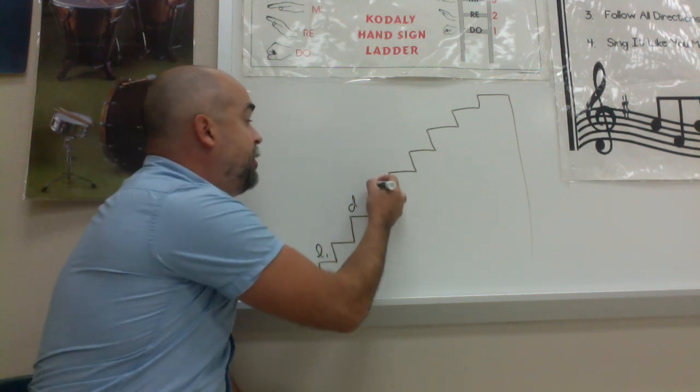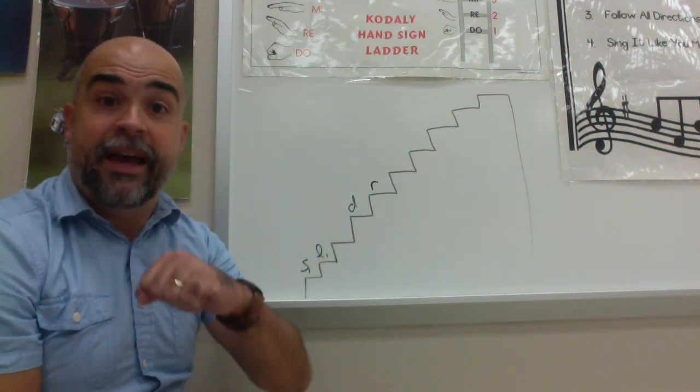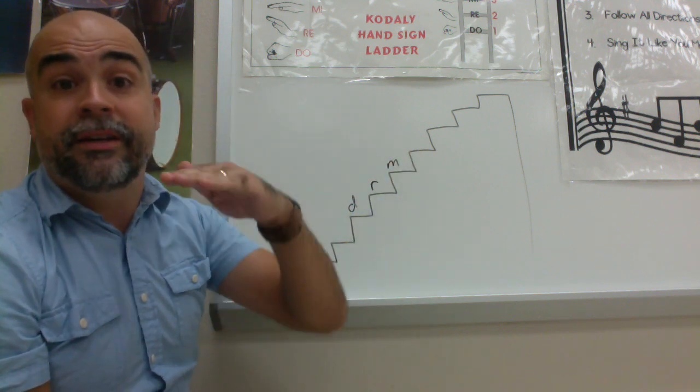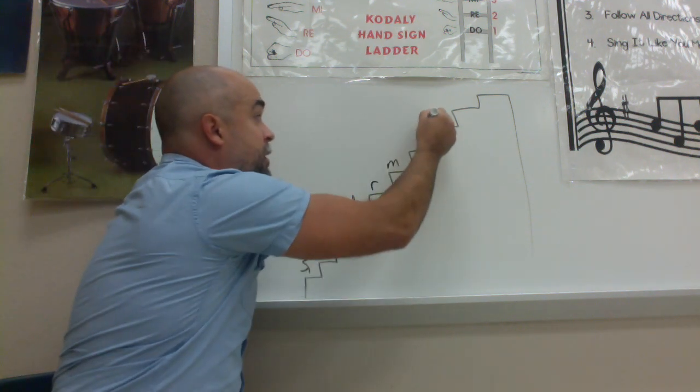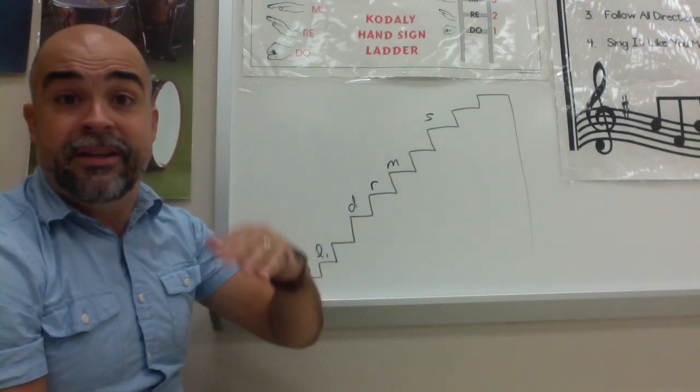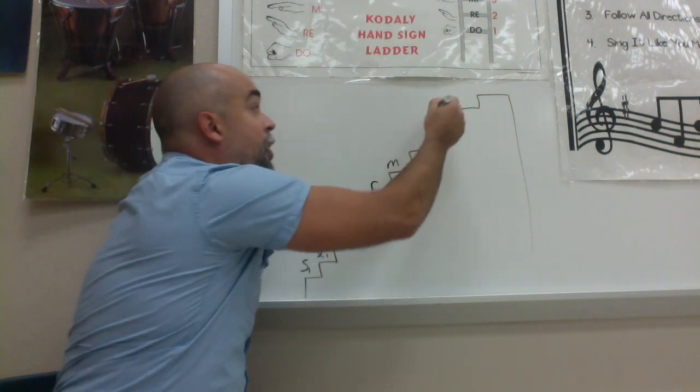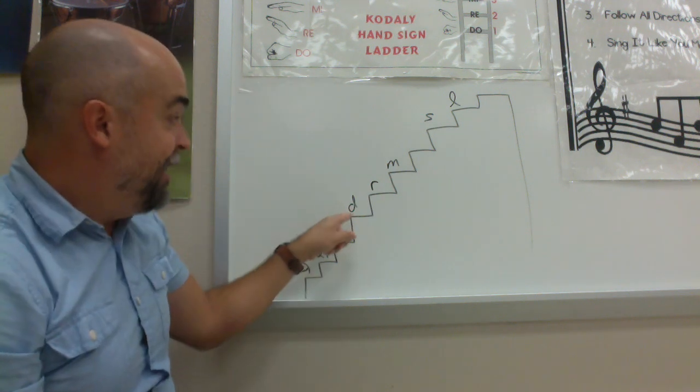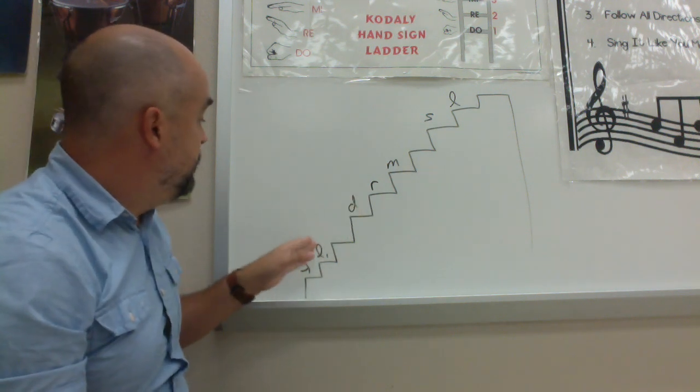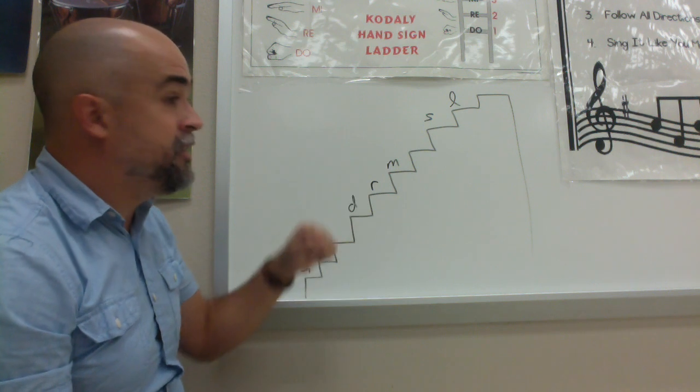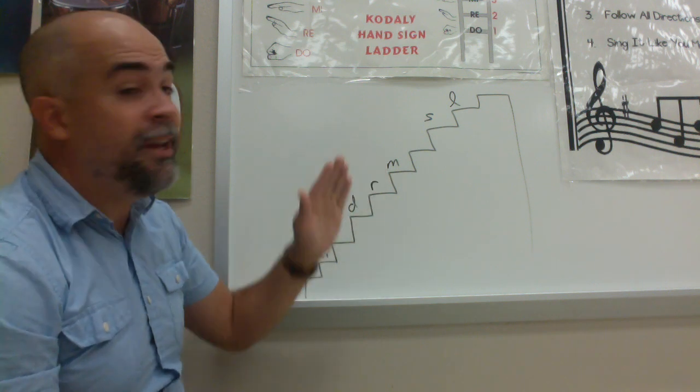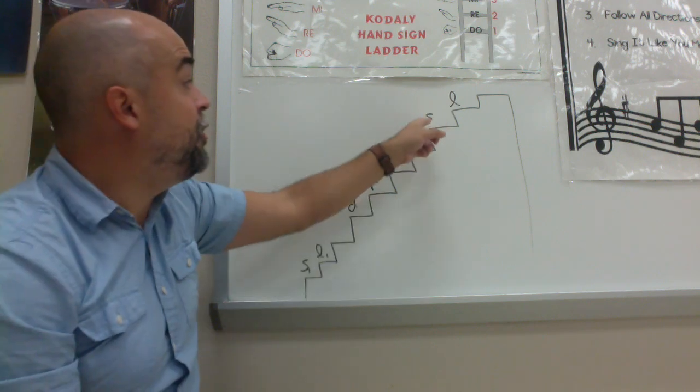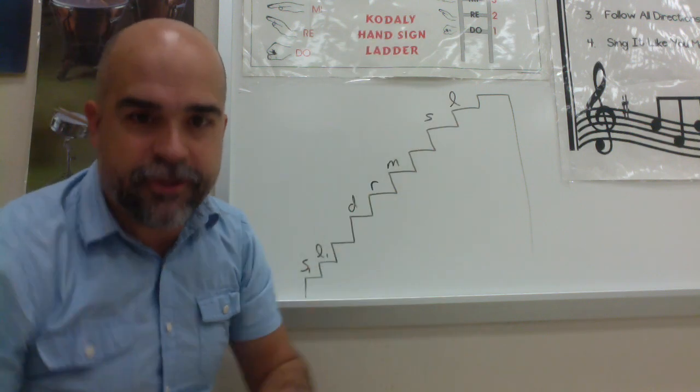Ready? Do re. Re mi. Mi sol. Sol la. So you should have sang: Do re, that's a step. Re mi, that's a step. Mi sol, that's a skip. Sol la, that's a step. Makes sense. Good.